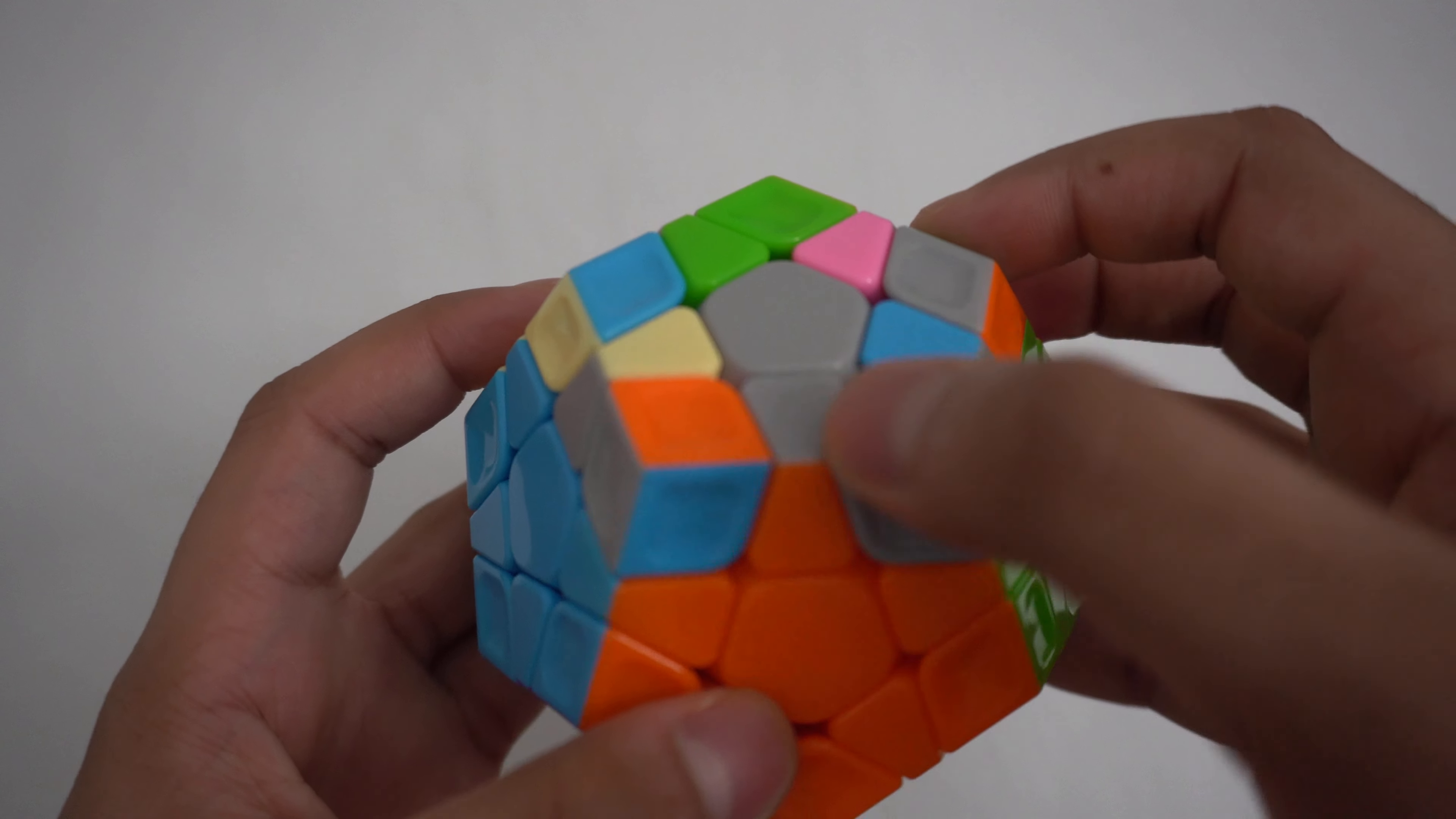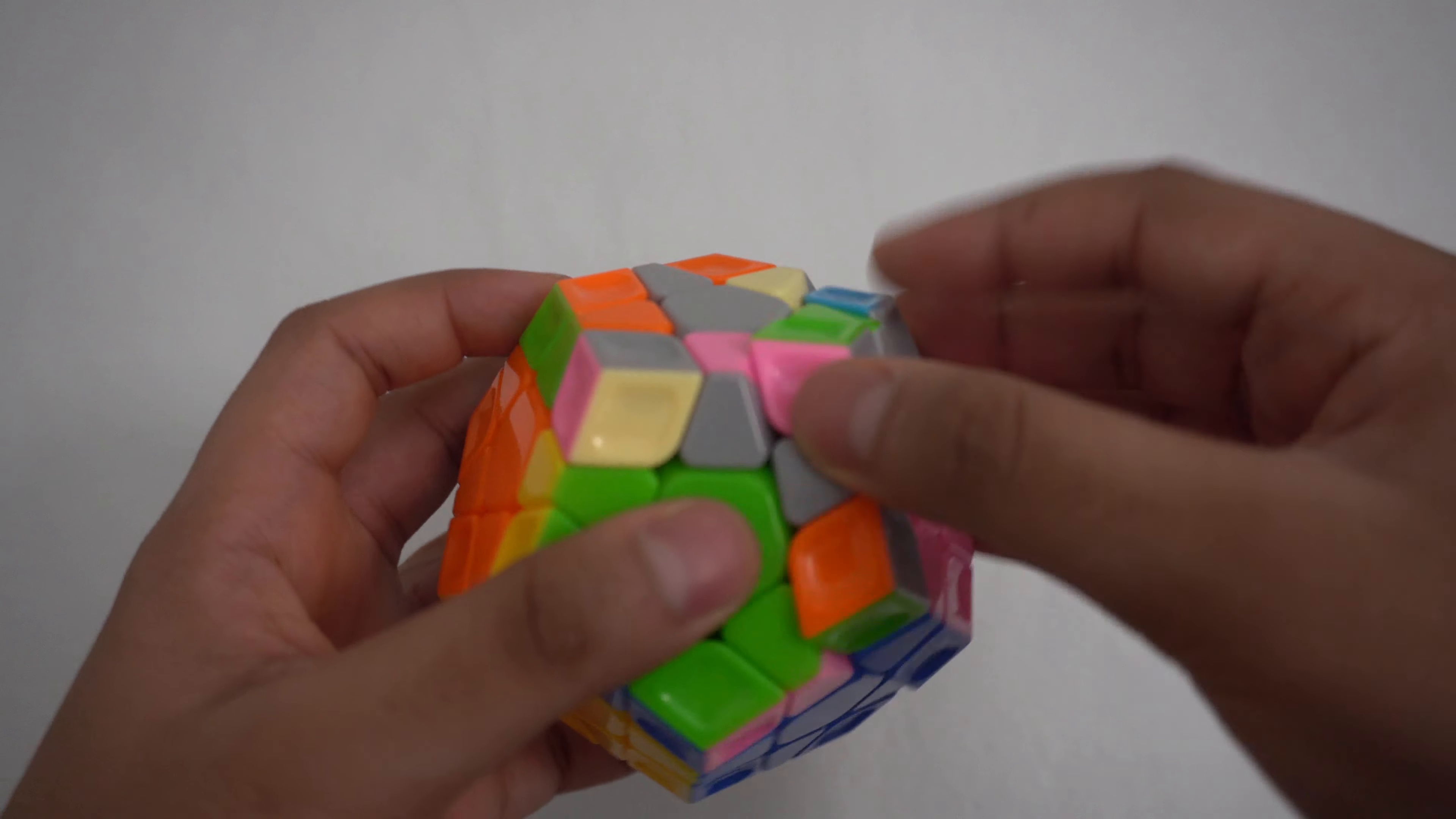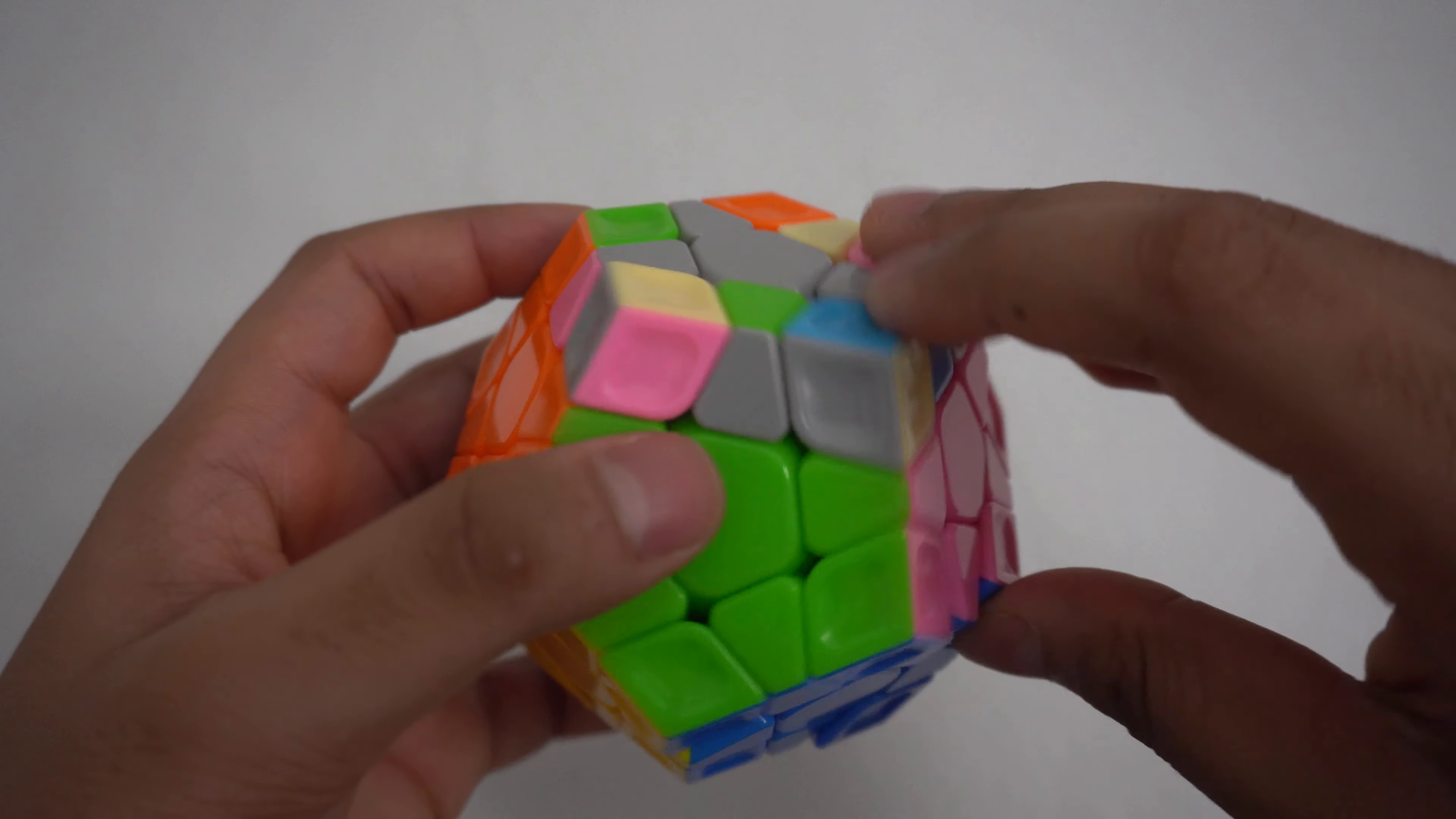If you have four edges to flip, first flip two of them with one of the algorithms that were shown previously, and then flip the final two with one of the algorithms.